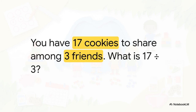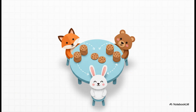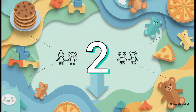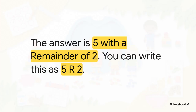Let's try a new problem so you can see exactly how this works. You've got 17 cookies and the same three friends — so we're doing 17 divided by 3. We already know that 3 times 5 is 15, so we can give each of our 3 friends 5 cookies. That uses up 15 of our cookies. But we started with 17 — so if you've handed out 15, you've got 2 left. Those 2 leftover cookies are our remainder. We write the answer as 5 R 2, meaning each friend gets 5 cookies and there are 2 extras left over.